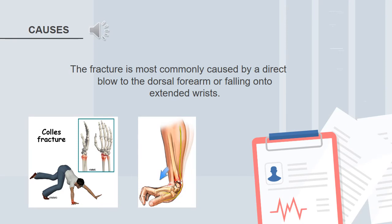The fracture is most commonly caused by a direct blow to the dorsal forearm or falling onto an extended wrist, as you can see in the image below.